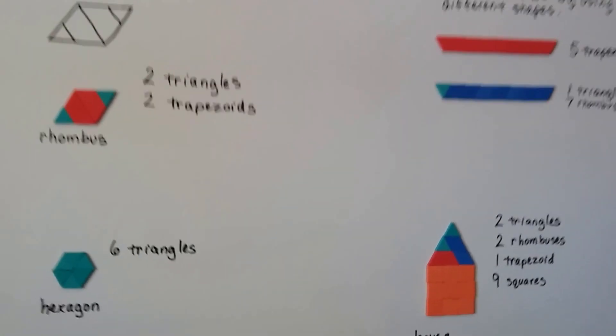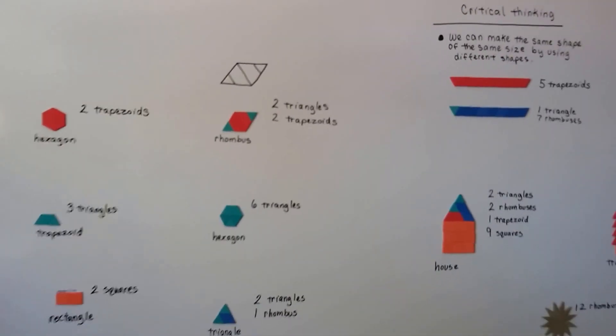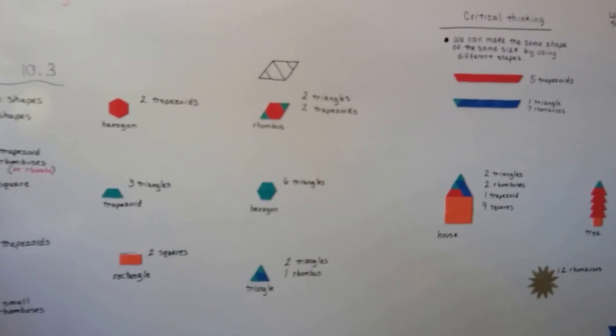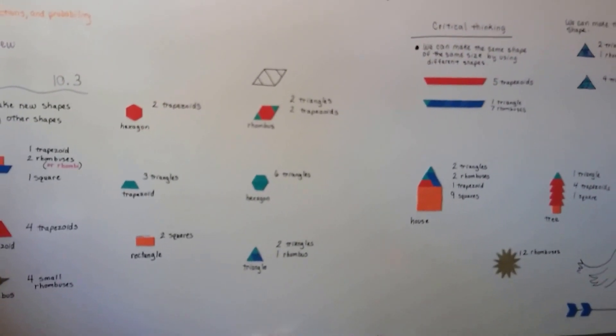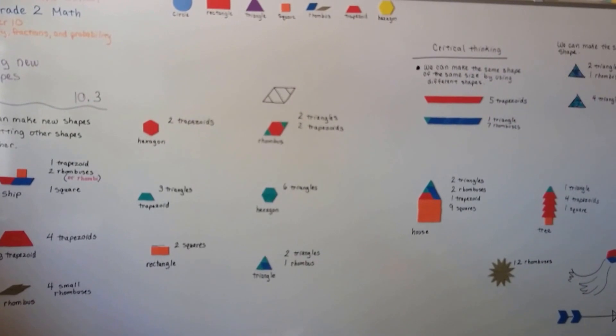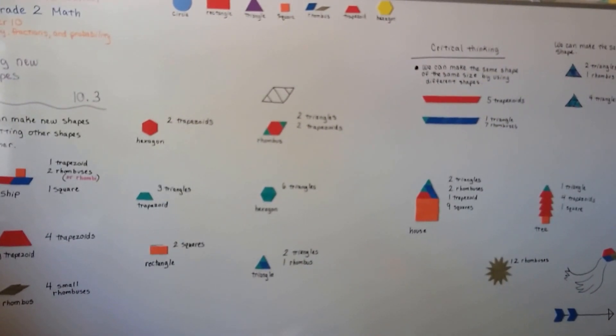So we can put shapes together to make new shapes. You can try doing this. If you have some construction paper or if you have some shapes that are like this, you can try making new shapes and see what happens when you put them together.